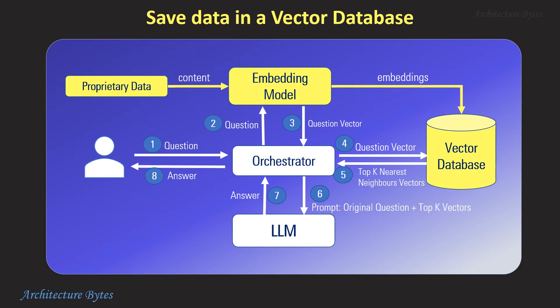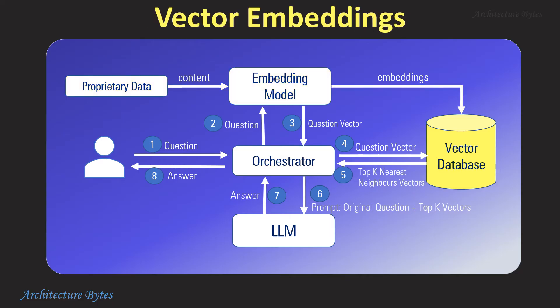Any data — for example, our proprietary data that we want to refer to — should first be saved as vector embeddings in a vector database. A vector database indexes and stores vector embeddings for fast retrieval and similarity search by programs. It is important to understand vector embeddings here, which is how the data is stored in a vector database. Vector embeddings are a type of feature representation of complex, high-dimensional data in lower-dimensional vectors. Our embedding model helps us do this conversion.